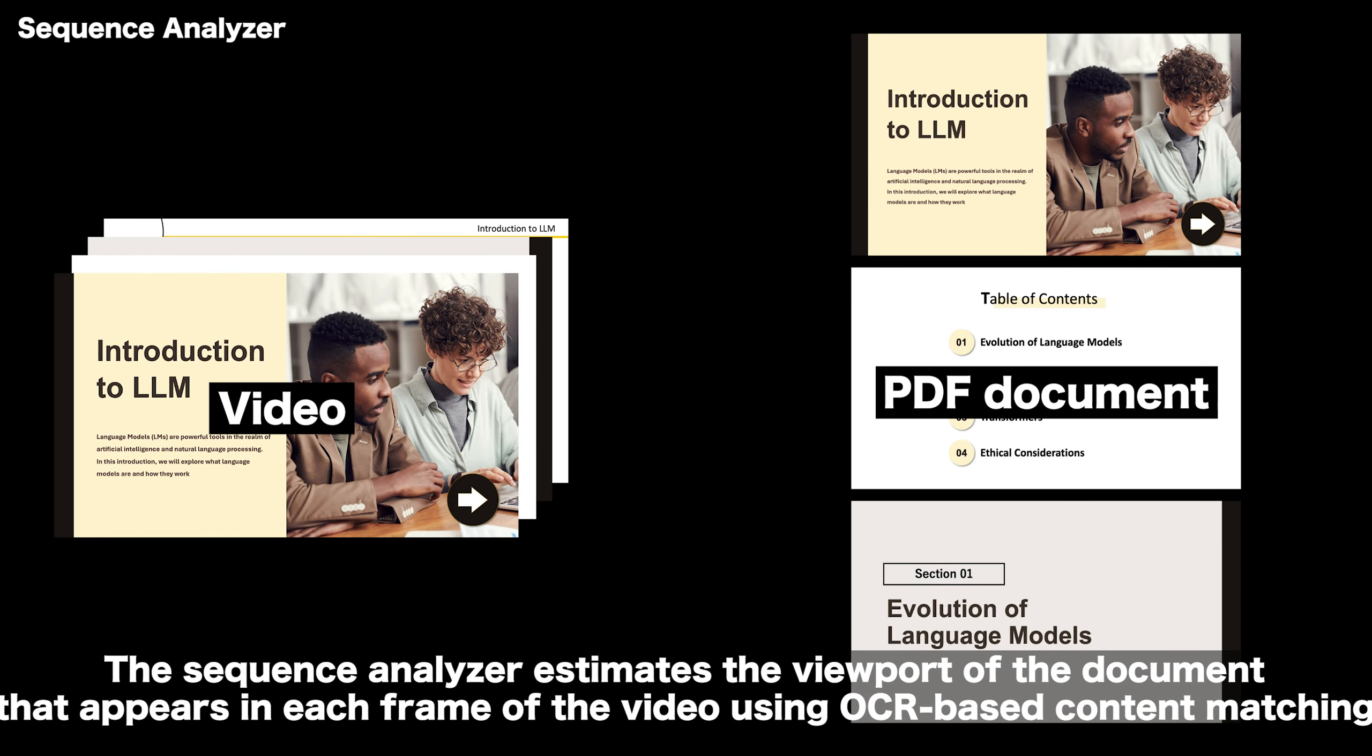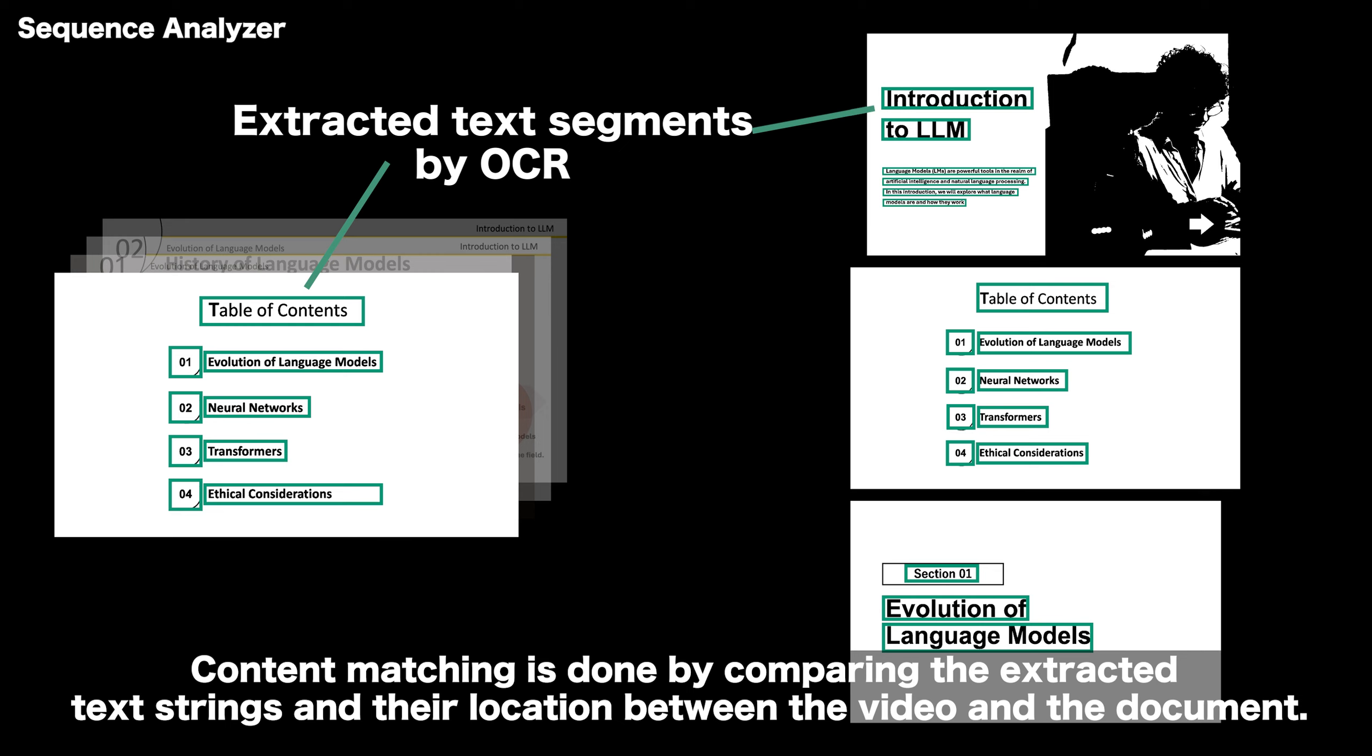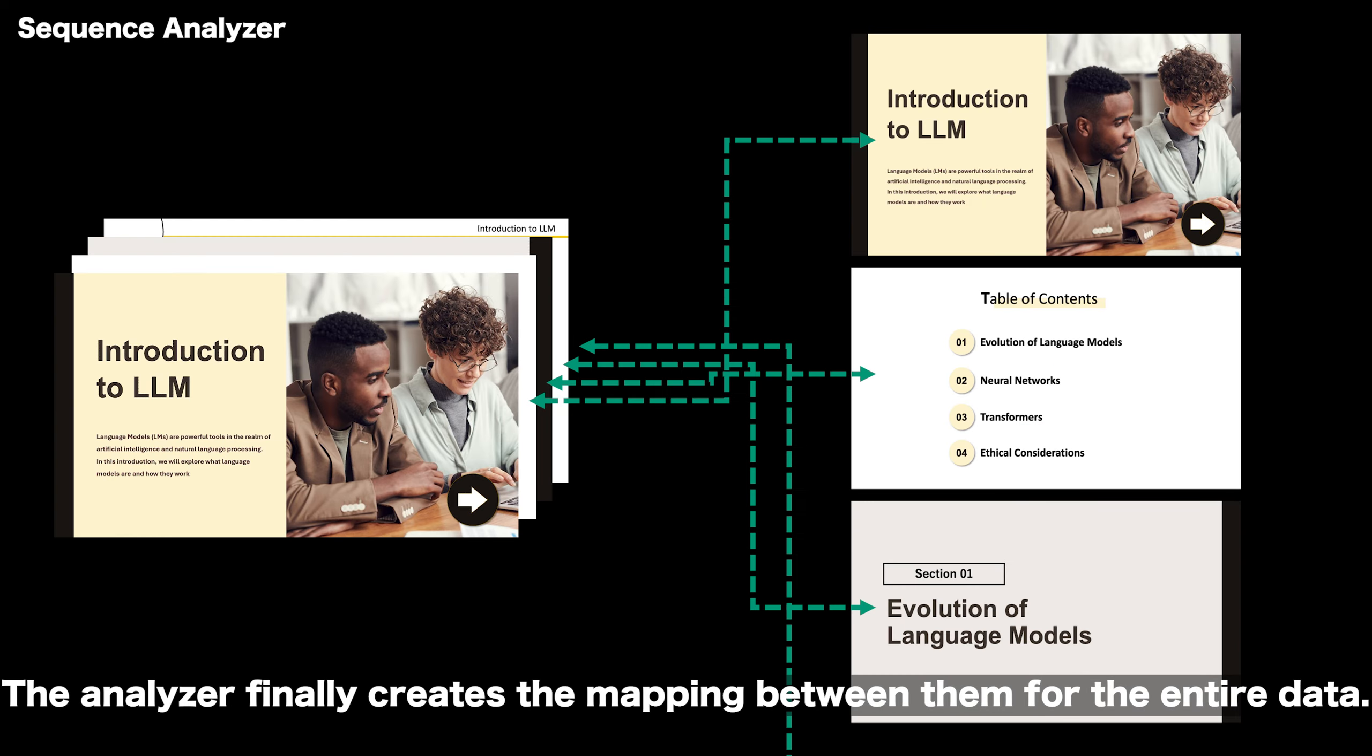The sequence analyzer estimates the viewport of the document that appears in each frame of the video using OCR-based content matching. Content matching is done by comparing the extracted text strings and their location between the video and the document. The analyzer finally creates the mapping between them for the entire data.